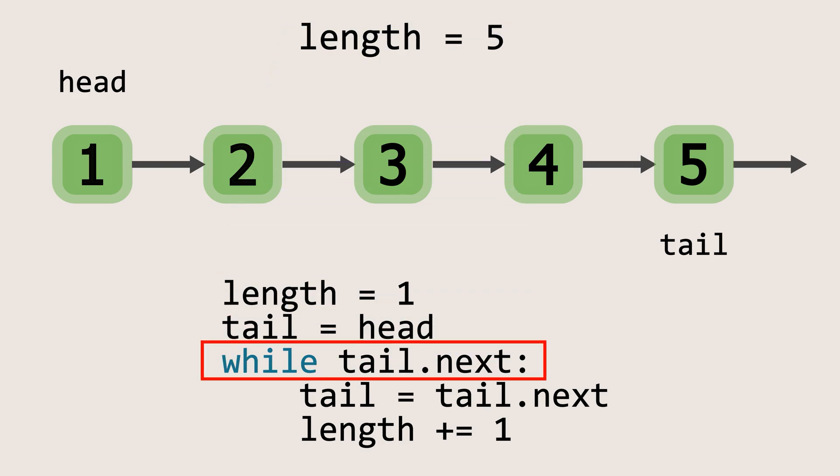So now, when the next of the tail becomes none, the loop ends. At this point, we have determined the length of the list which is 5.